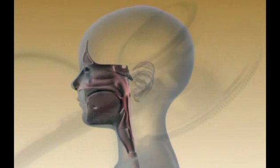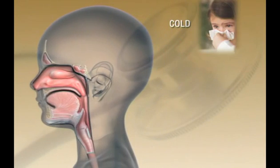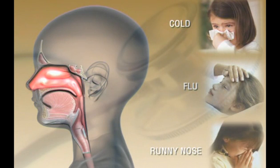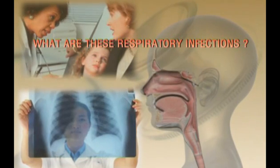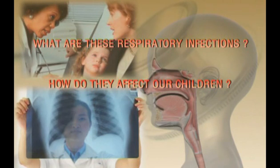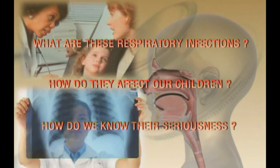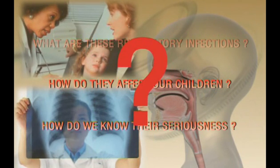Respiratory infections include a variety of problems like cold, flu, runny nose, cough, and sore throat. Many times these run a long course and become chronic, affecting the breathing system, causing what we all fear: asthma, pneumonia, tuberculosis. So what are these respiratory infections? How do they affect our children, and how do we know their seriousness? These are a few of the questions that we need to answer in order to protect our future generation. Let us see how.